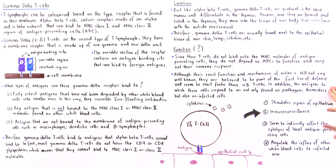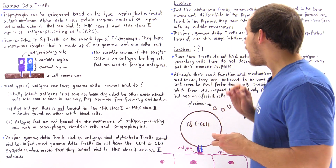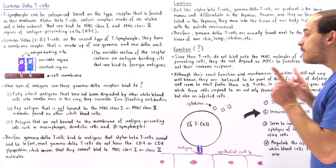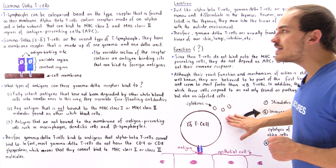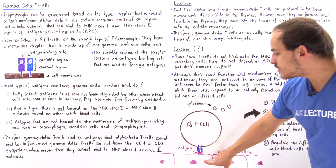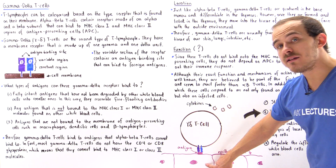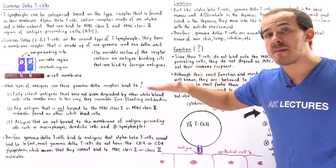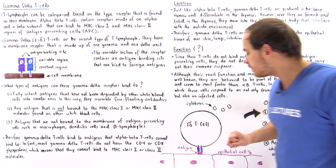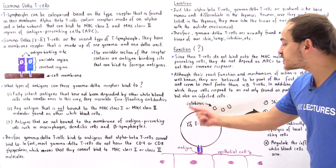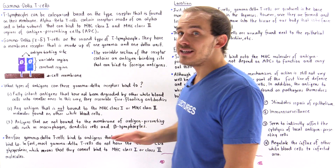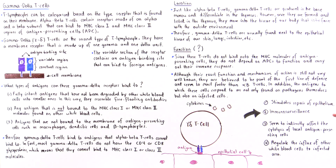The antigens to which gamma-delta T cells bind are found not only on pathogens such as bacterial cells, but also on infected cells of our body. For example, if an epithelial cell is infected, that cell displays an antigen on its membrane, and the gamma-delta T cell uses its receptor to bind onto that antigen. Once bound, it begins to release special chemicals called cytokines.